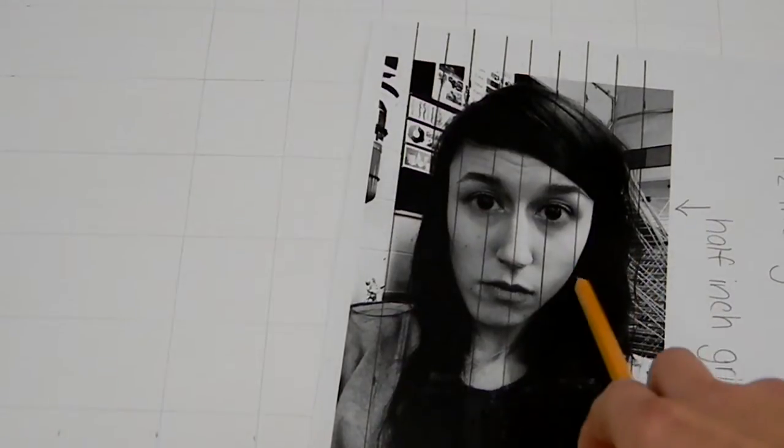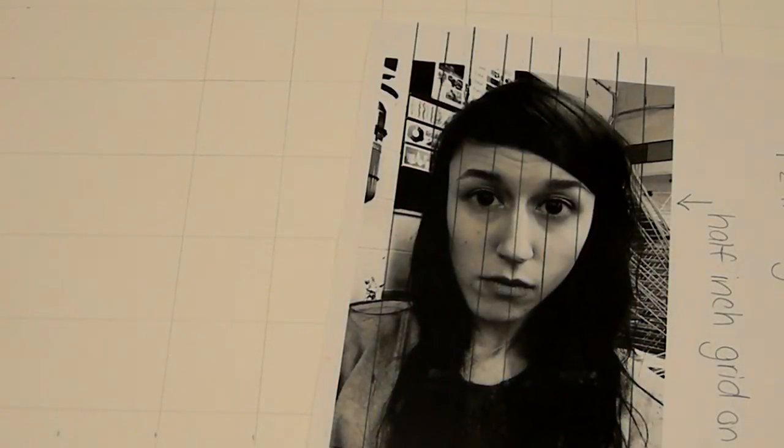You'll each be starting with a 5 by 7 photograph of yourself. On this photograph we're going to make a half inch grid. I'm going to go in with a ruler and create a nice even grid throughout.